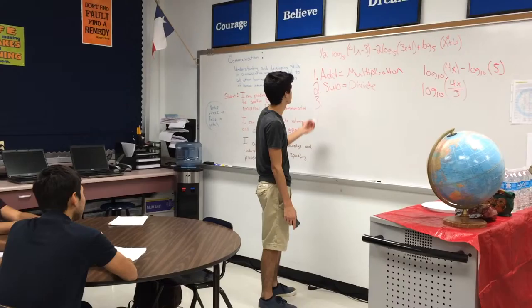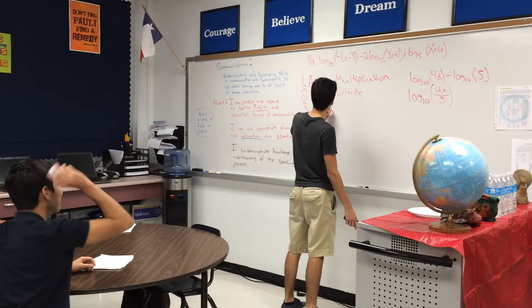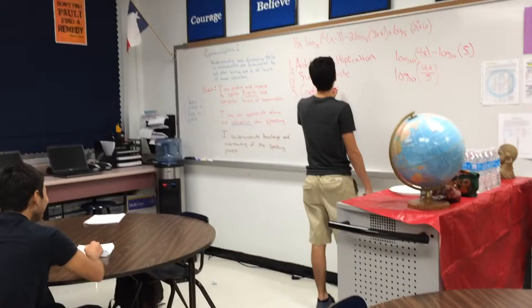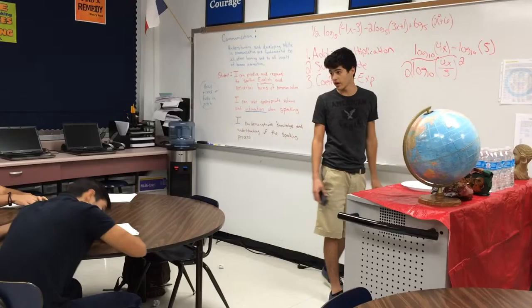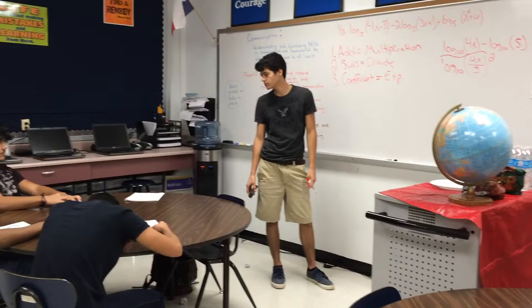Now the third law is whenever you have a coefficient — when you have a coefficient, that goes to an exponent. So if it was 2 log 10, this would just become an exponent to square. You take that off whenever you are combining logarithms.